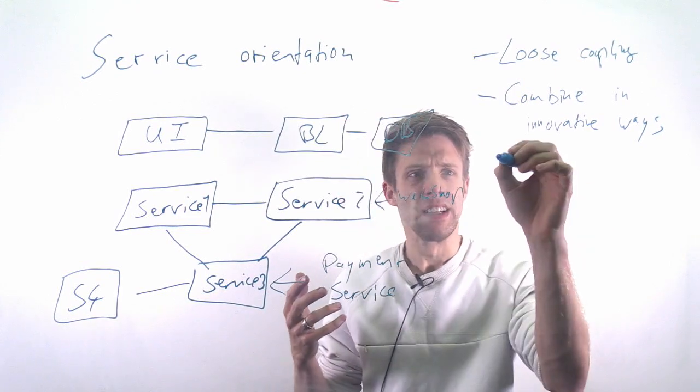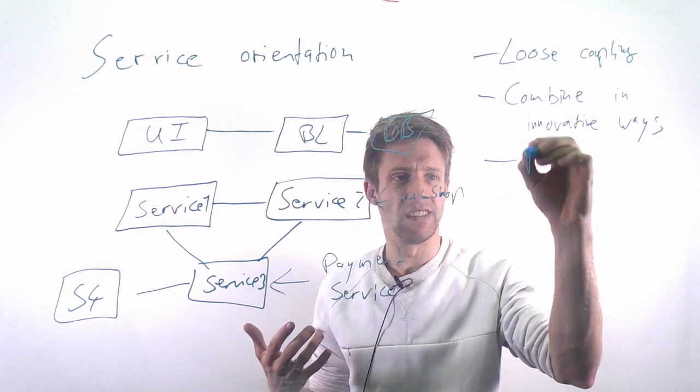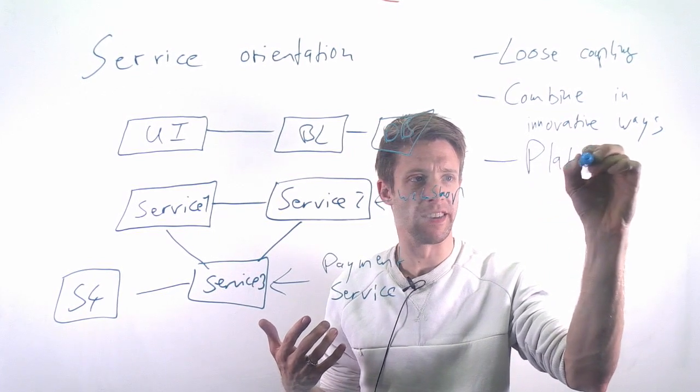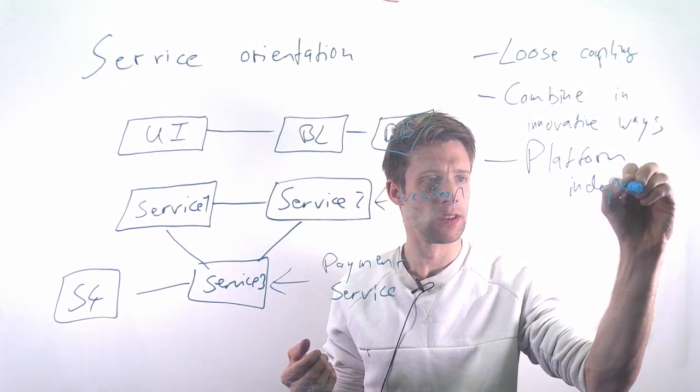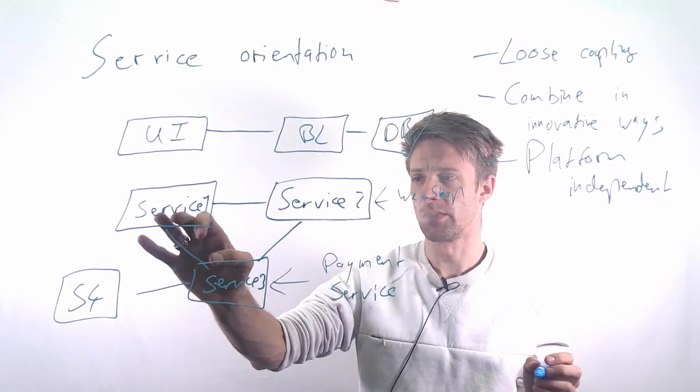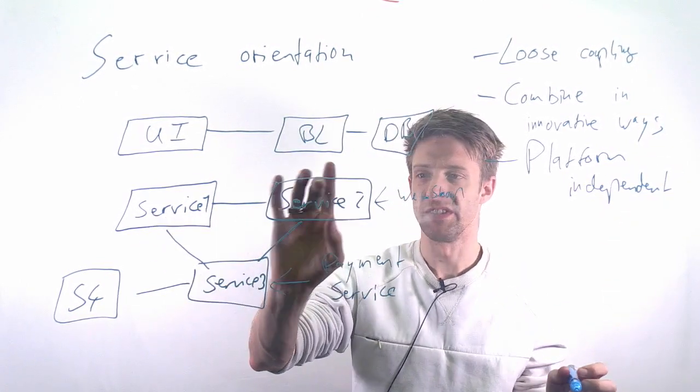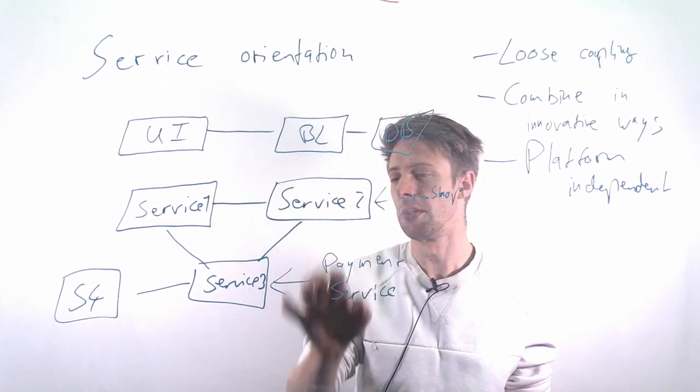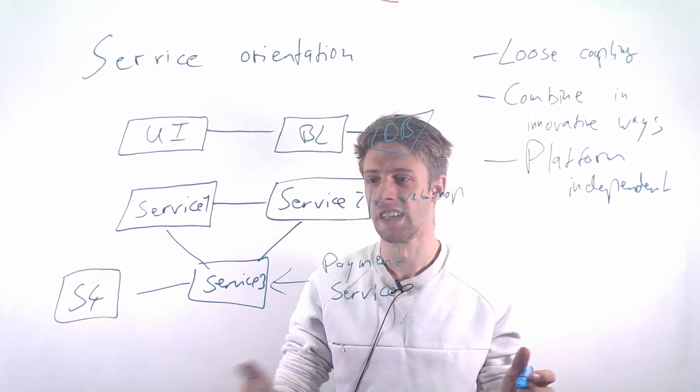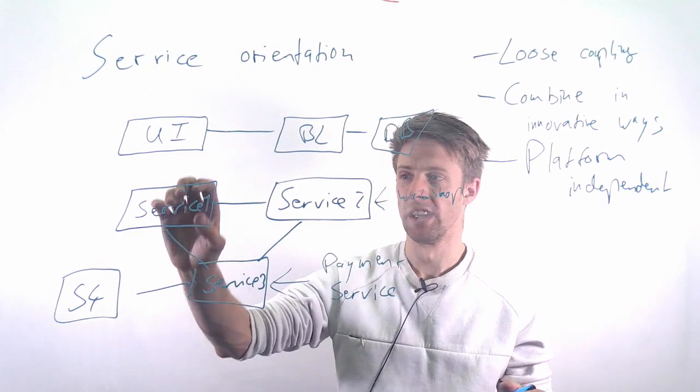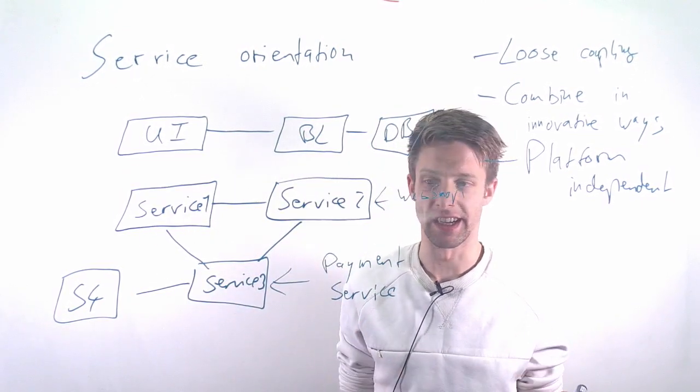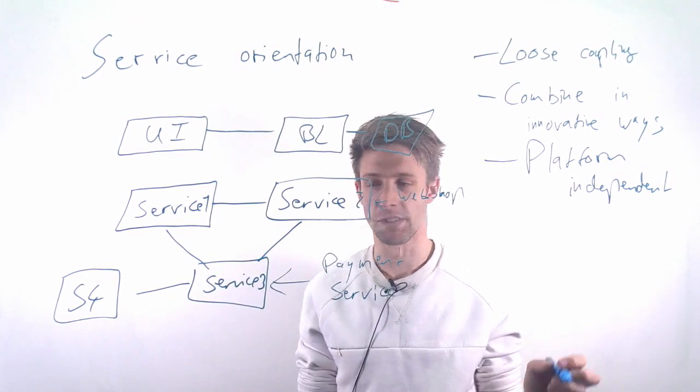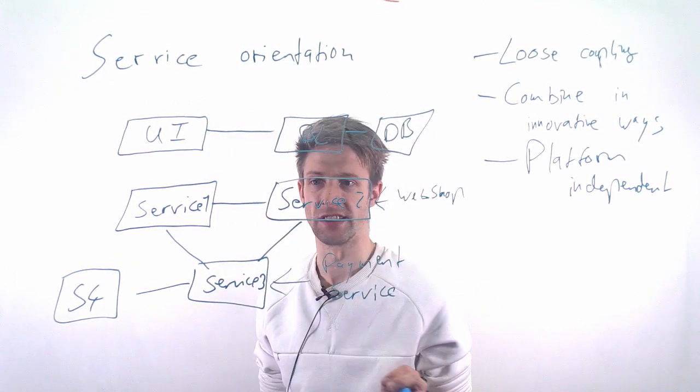Ideally, these things should be platform independent. Service one might run on an Android phone, service two might be on a Windows computer, and service three runs on Linux implemented in JavaScript. This is implemented in Java, this is implemented in C++, or something else. Ideally this should be platform independent and the communication should be standardized.